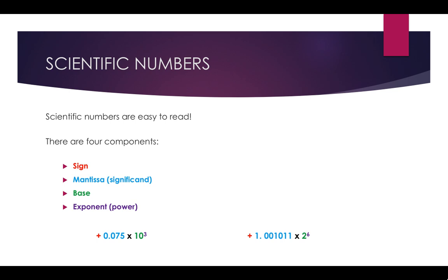With the decimal number on the left, the sign is the positive sign shown in red — for a negative number you'd see a negative sign. The mantissa is shown in blue. The base, which is 10 for decimal numbers, is shown in green, and the exponent or power is shown in purple. On the right-hand side we have the binary number 1.001011 — that's the mantissa. The sign comes before it in red, and then it's multiplied by the base 2 to the exponent, which is 6.